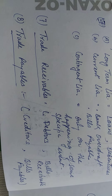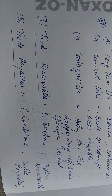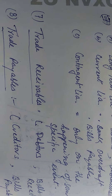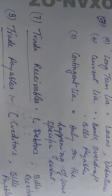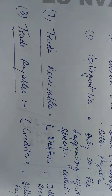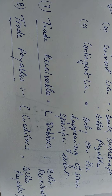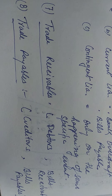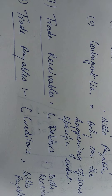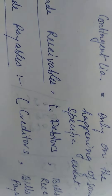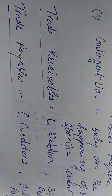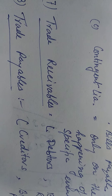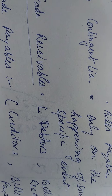Let's continue with basic accounting terms. Now we are on trade receivable. Trade receivable refers to the amount received on account of sale of goods. Like debtors — debtors represent those persons to whom goods have been sold on credit. They become our debtors.